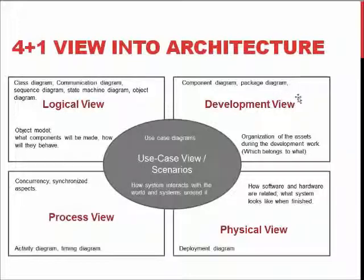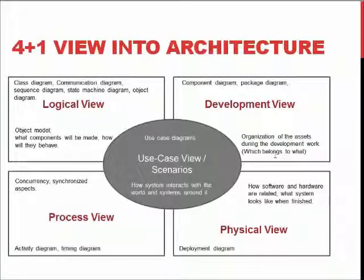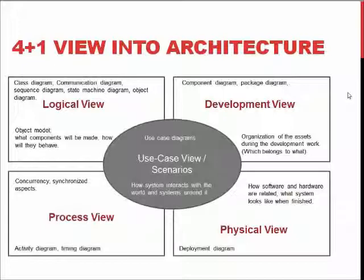Just like with buildings, we have several ways to describe different things that will happen — for example, the waterworks, the electrical work, the floor plan, the facade, and how the building fits into the landscape around it. We can define what the system will look like when it's deployed, how the system will be handled when being developed, how the system interacts, how different processes or activities happen, and what sort of components we will be developing. Combining all these things gives us a software architecture.